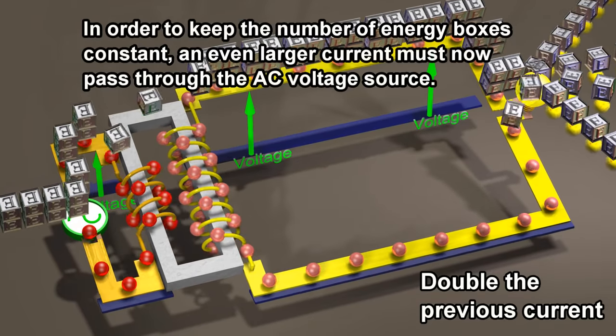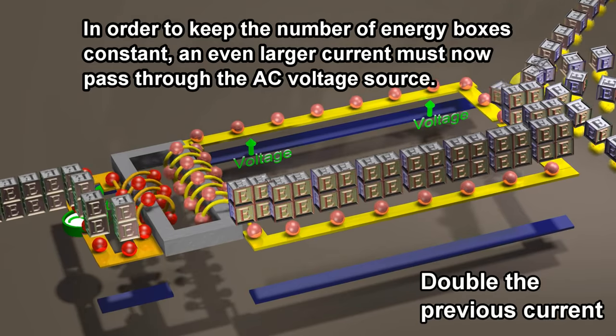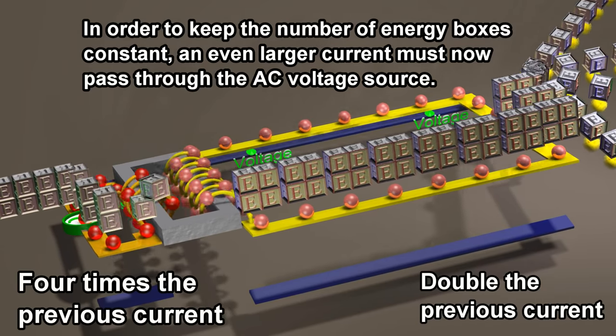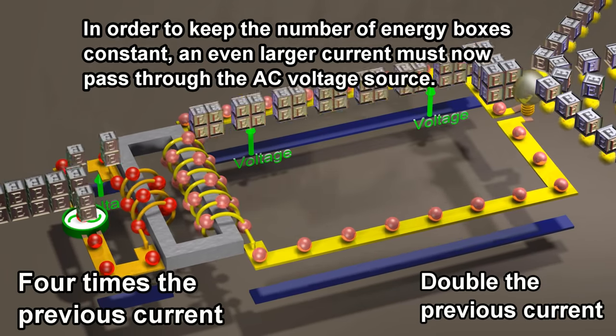In order to keep the number of energy boxes constant, an even larger current must now pass through the AC voltage source.